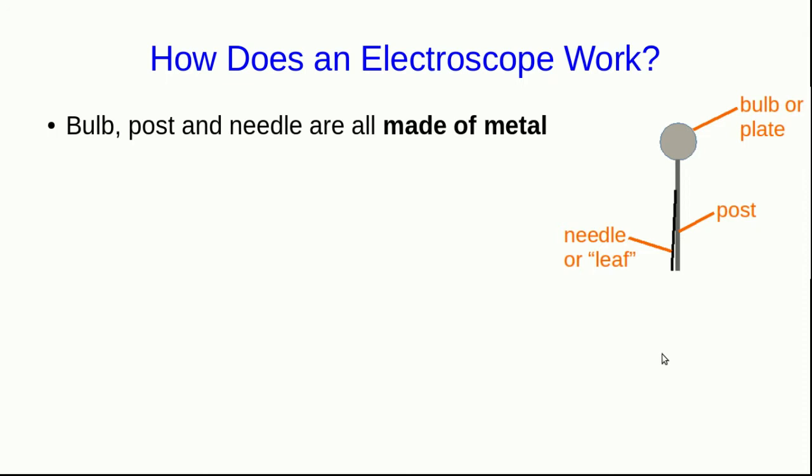An electroscope is useful for demonstrating several things that we need to understand. So, let's understand how an electroscope works. Some terminology is useful. At the top of the electroscope is a bulb or plate, and attached to that is a post. And hanging from the post is either a needle or a thin piece of foil called a leaf.